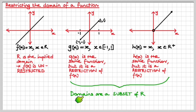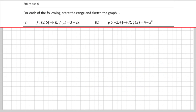And as a last little comment, these domains are a subset of R. Well, of course they are. Okay, the last example now for this section 1b, which was all about relations and functions. So what have we got? For each of the following, state the range and sketch the graph. Let's have a look. This one here. Now, this is all in this new gobbledygook notation.